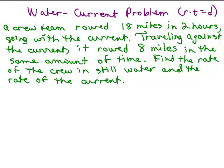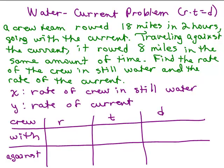So what we're going to do is make up a chart and we need to define two things because we're looking for the rate of the crew in still water and the rate of the current. I've chosen to let X be the rate of the crew in still water and Y the rate of the current. I usually use other letters, but since I'm talking about crew and current, I didn't want to use C because it could be confusing which it stood for.